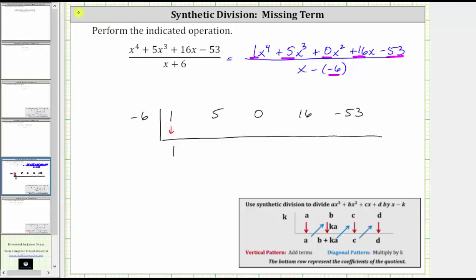And now we multiply by k and place it below the five in the next column. Negative six times one is negative six. Again, the vertical pattern is to add. Five plus negative six is negative one. The diagonal pattern is to multiply by k. Negative six times negative one is positive six.